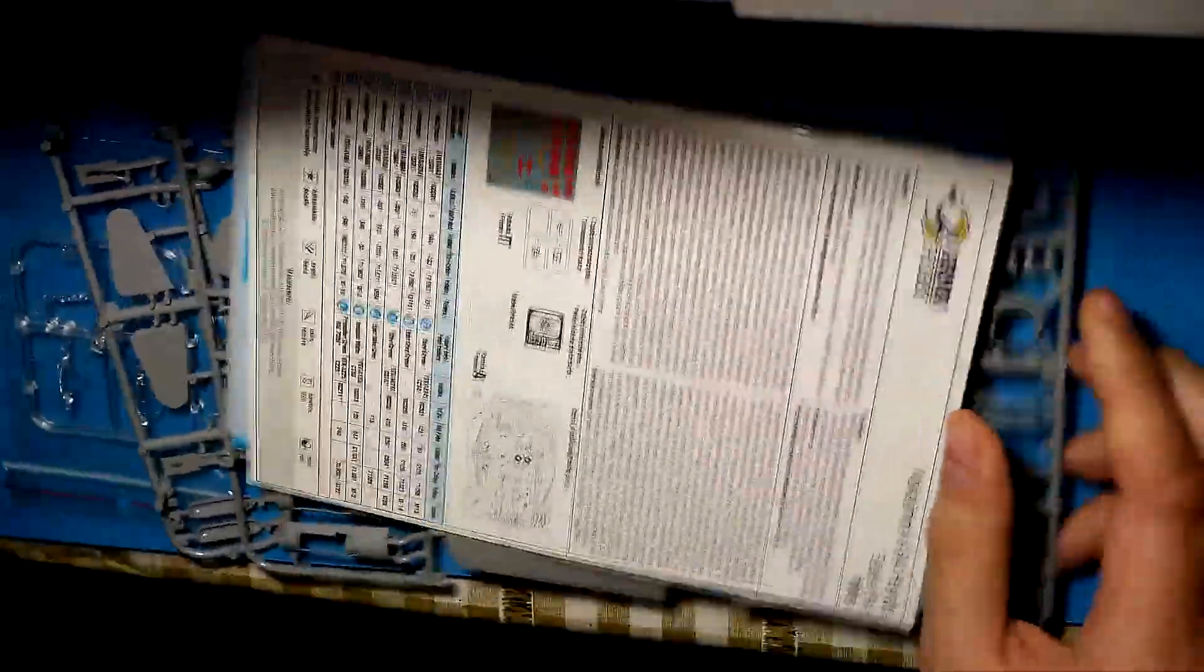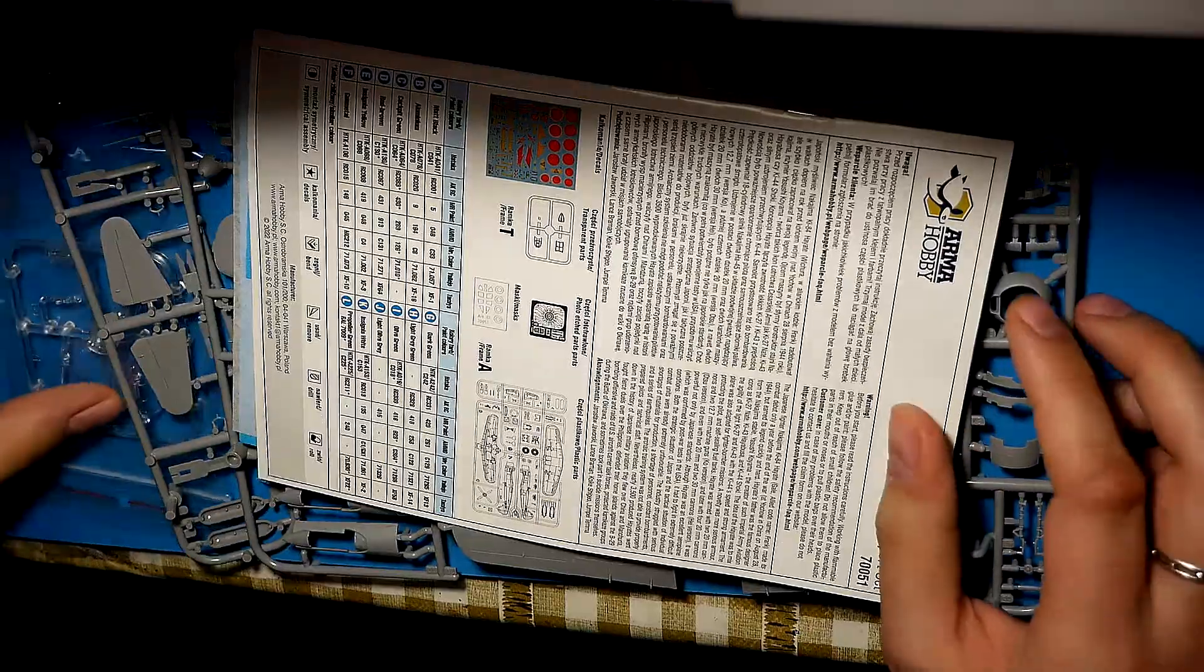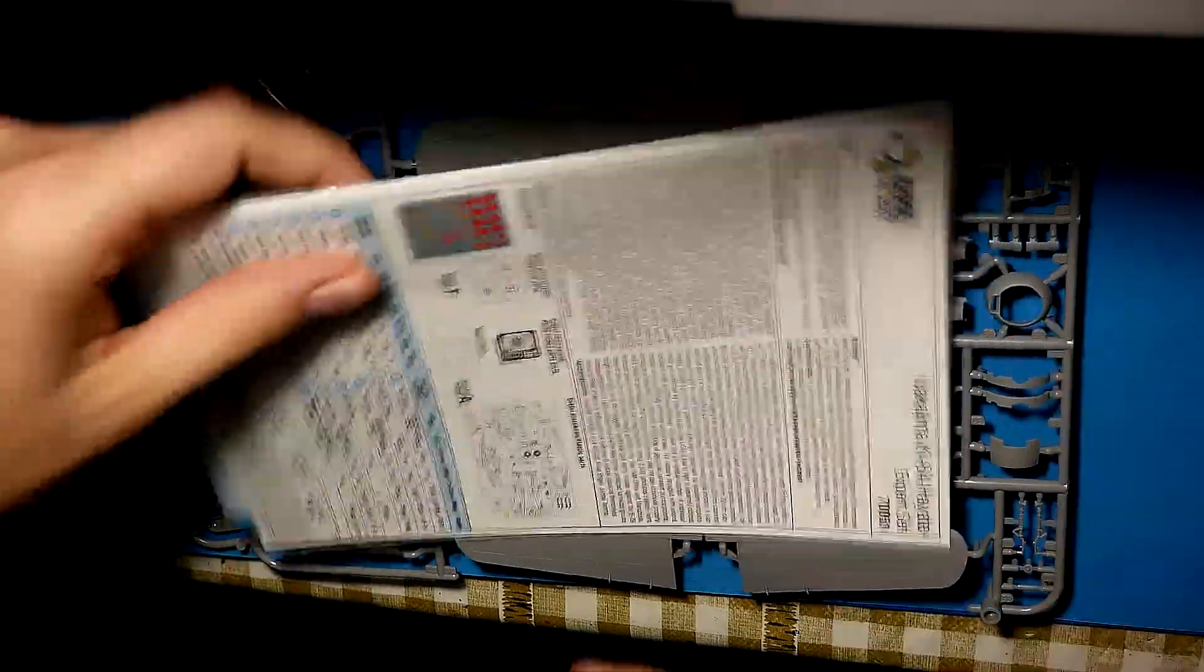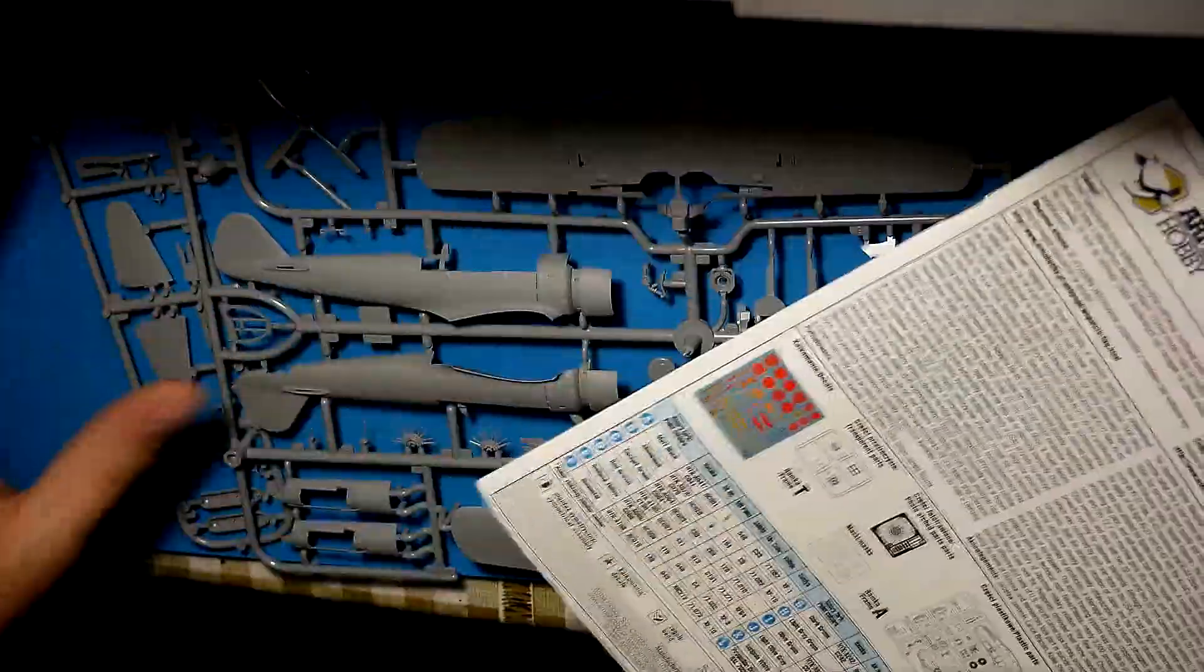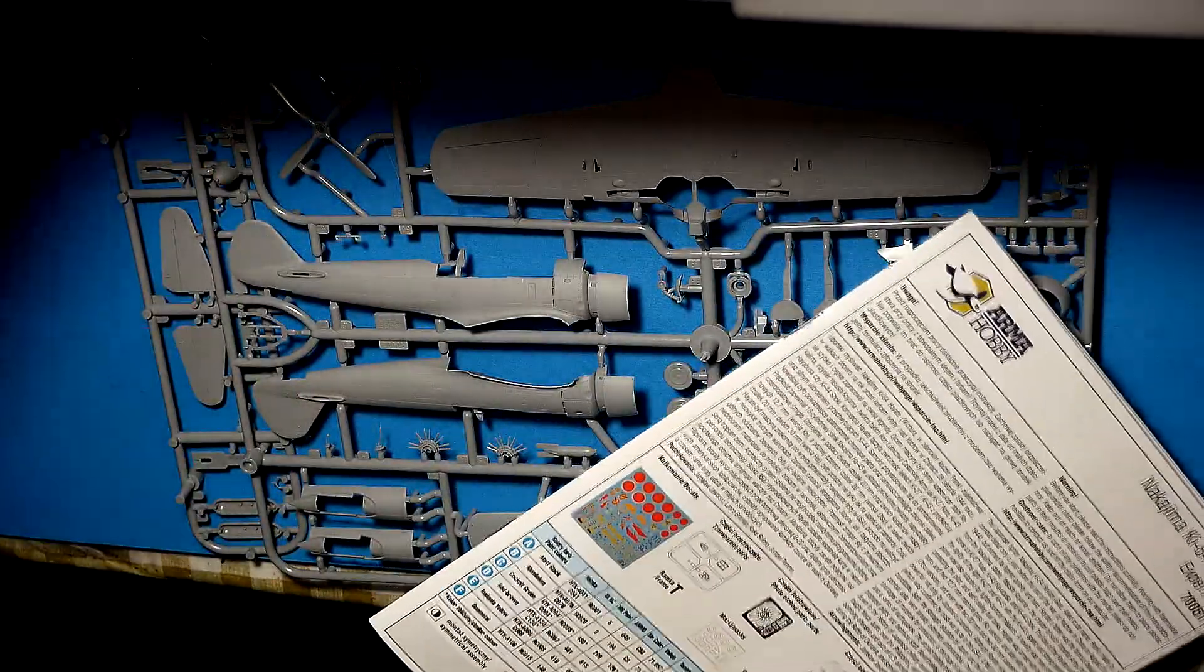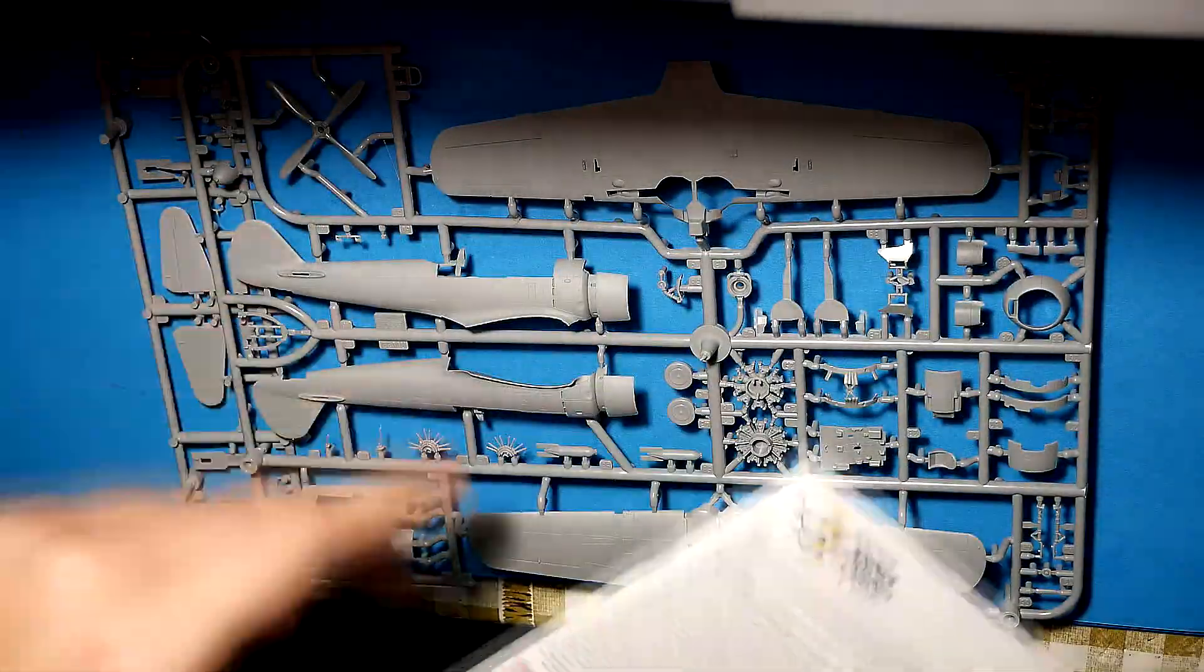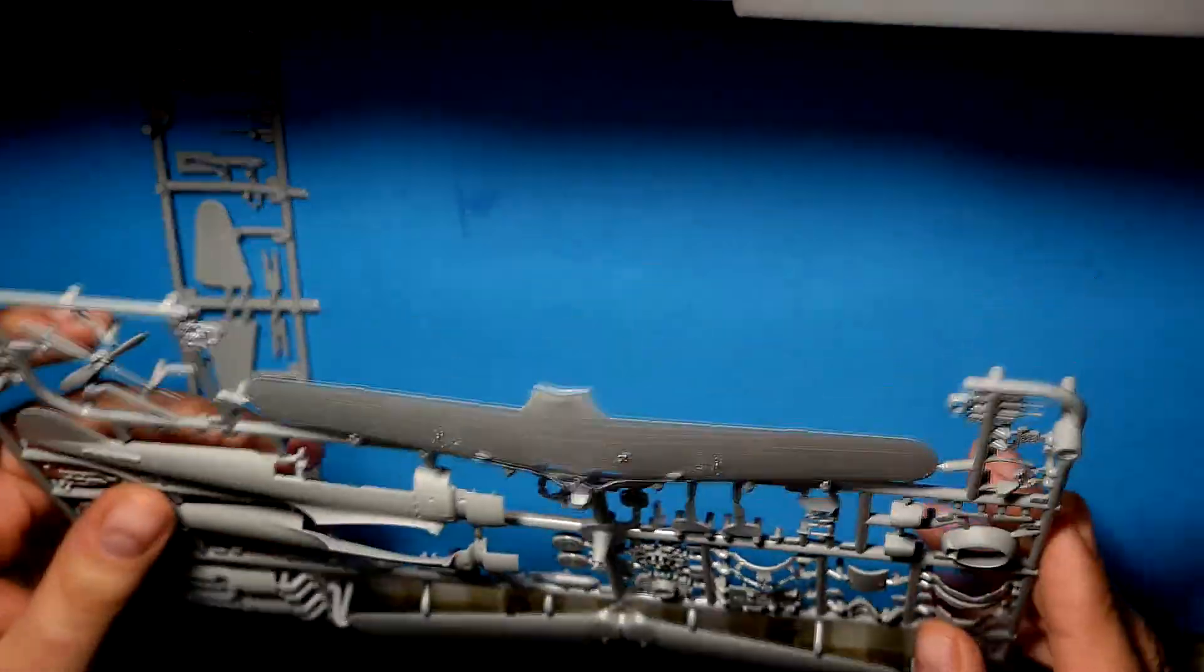Here is, like in almost every kit of Arma Hobby, instruction, two frames, three frames including clear parts, and now some decals inside of the instructions and one instruction. That is pretty much all inside.